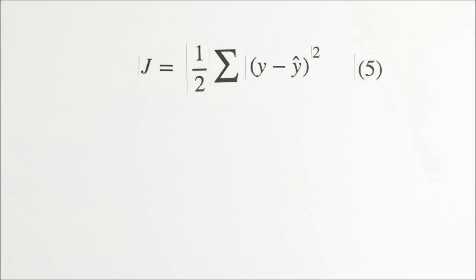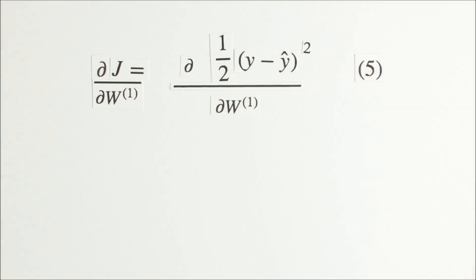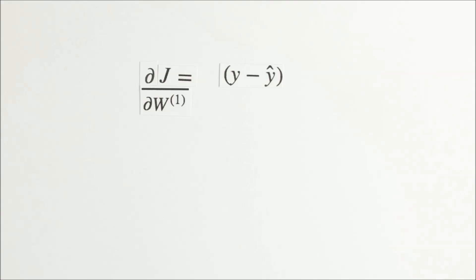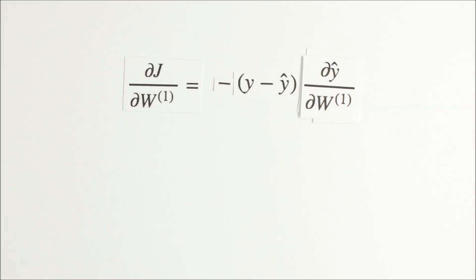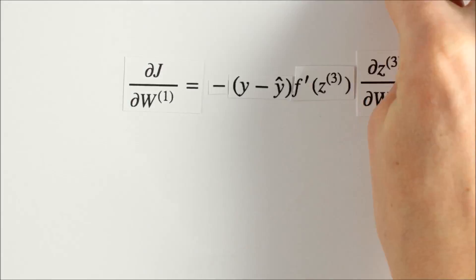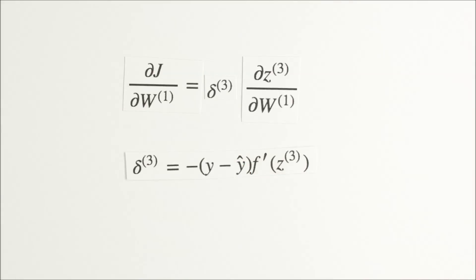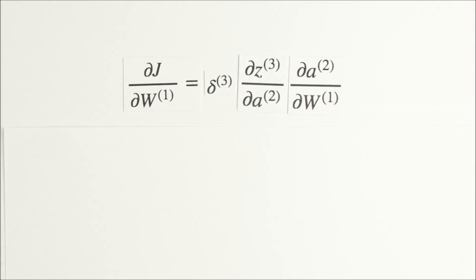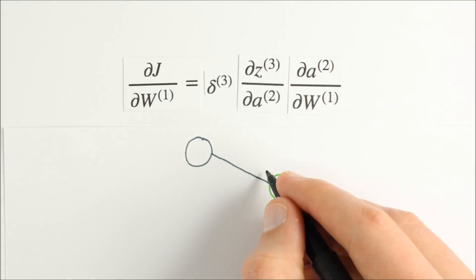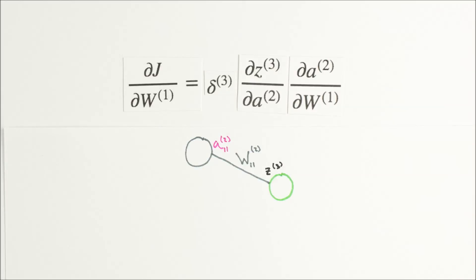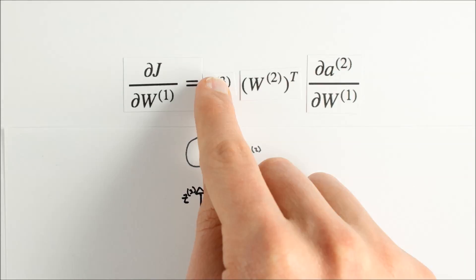We now have one final term to compute, djdw1. The derivation begins the same way as before, by computing the derivative through our final layer, first djdyhat, then dyhat dz3. We now take the derivative across our synapses, which is a little different from our job last time, which was computing the derivative with respect to the weights on our synapses. There's still a nice linear relationship along each synapse, but now we're interested in the rate of change of z3 with respect to a2. Now the slope is just equal to the weight value for that synapse. We can achieve this mathematically by multiplying by w2 transpose.